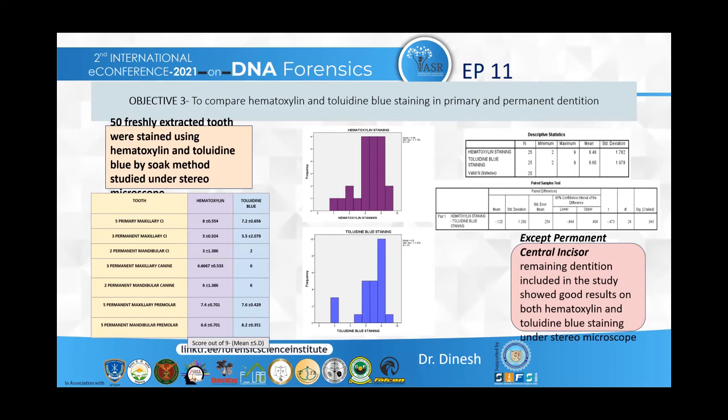Both hematoxylin and toluidine blue stains showed mean and standard deviation values of 6.4 and 6.5 respectively. The parity test comparing hematoxylin and toluidine blue found no significant difference between them. Therefore, both stains can be used for studying the ameloglyphics pattern.